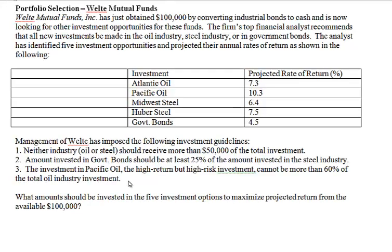The third guideline limits the amount that goes into Pacific Oil Company. Pacific Oil has the highest rate of return but is high risk, so we want to limit the money going there — it cannot be more than 60% of the total oil industry investment. The oil industry is represented by two oil companies, and the steel industry is represented by two steel companies.